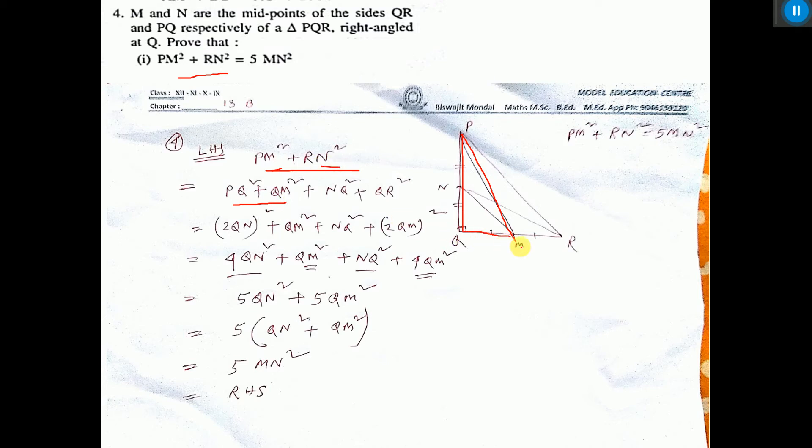And RN², RN² is equal to NQ² + QR². That is written.